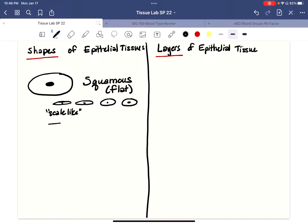The next shape is called cuboidal. Of course, this means these cells are shaped kind of like a cube. So these are cuboidal. This is a cube or a three-dimensional square, right? Cuboidal. And what I've forgotten to add here is a nucleus.